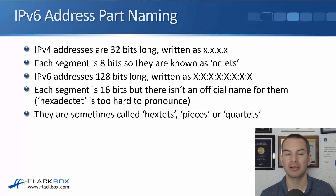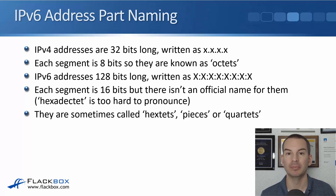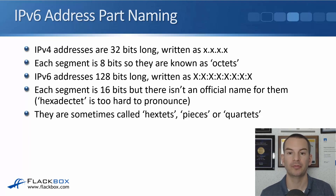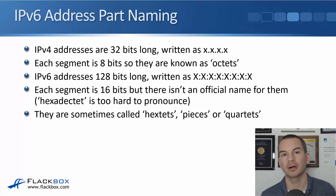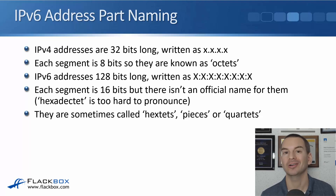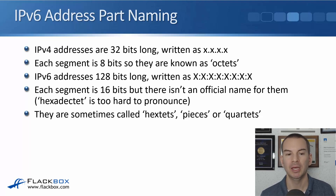Our IPv4 addresses are 32 bits long and written as x.x.x.x. Each of those segments between the dots is 8 bits long, and we've got 4 of them — so 4 times 8 gives us our 32-bit address. Each part of an IPv4 address is known as an octet, because it is 8 bits long.